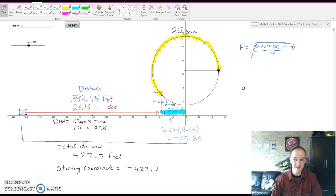Since distance is speed times time and we know the speed of the cart, we were able to find that the cart had moved the total distance of 392.45 feet. To that number we also had to add 35.36 feet which came from the horizontal position of the diver using a cosine equation. So the total distance from the starting position of the cart to the 0x axis was 427.7 feet and then we had to attach a negative because the cart starts to the left of the center.